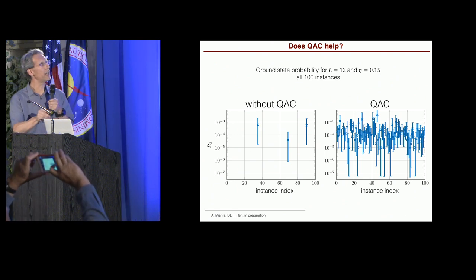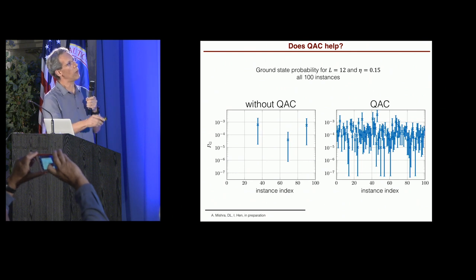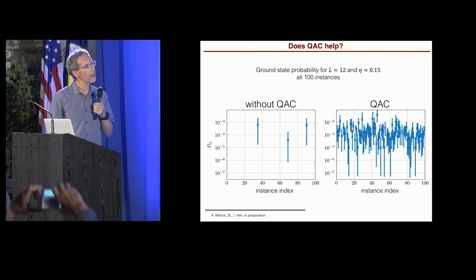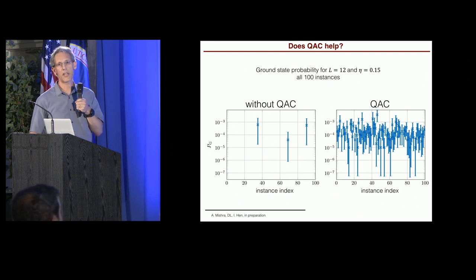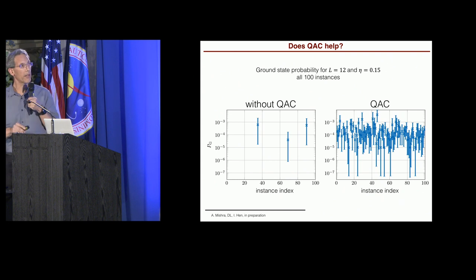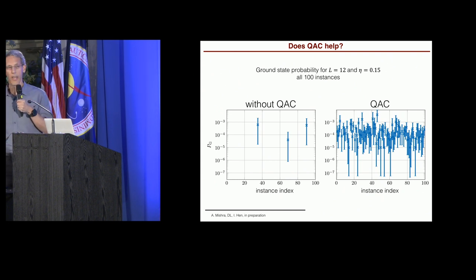With quantum annealing correction, every single instance is now solved. Okay. With a low success probability, but every instance is solved.